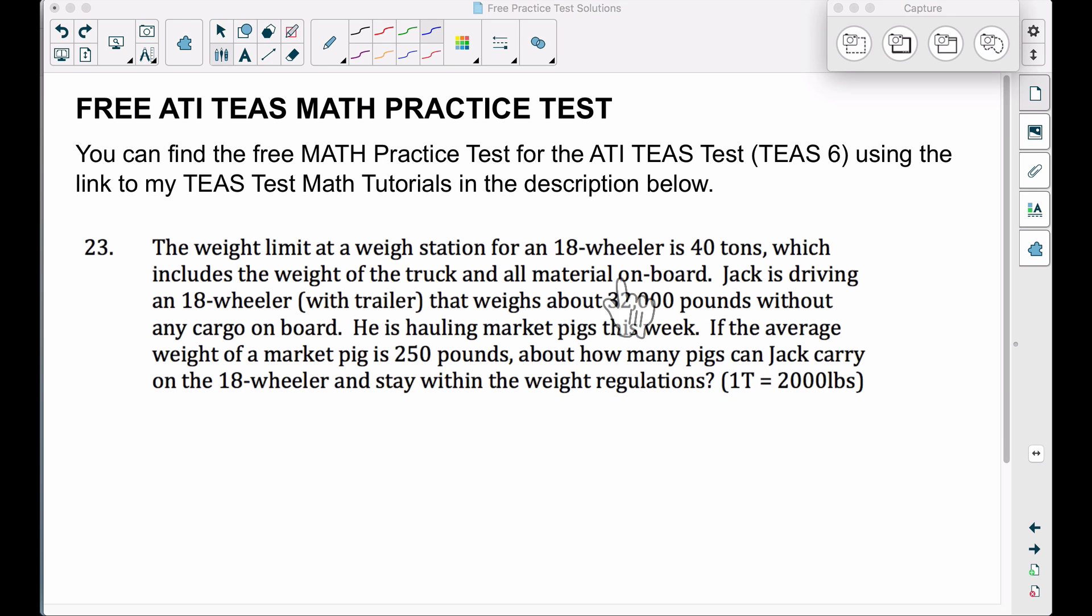One ton equals 2,000 pounds. There's a conversion. Now, I have a proportion set up here. Some of you may know if one ton is 2,000 pounds, 40 tons, you just take 40 times 2,000, that'll tell you how many pounds there are in 40 tons. However, if you get confused as to whether to multiply or divide, we can set up a proportion. One ton equals 2,000 pounds, so 40 tons equals X pounds.